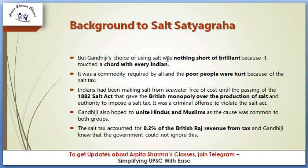But Gandhi's choice of using salt was nothing short of brilliant because it touched a chord with every Indian. It was a commodity required by all, and poor people were hurt by the salt tax. Indians had been making salt from seawater free of cost until the passing of the Salt Act in 1882, which gave the British a monopoly over the production of salt and the authority to impose a salt tax. The salt tax accounted for 8.2% of British Raj tax revenue, and Gandhiji knew the government could not ignore this.